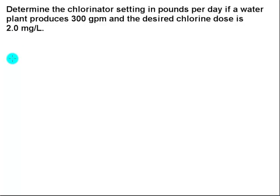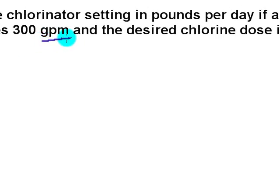Determine the chlorinator setting in pounds per day if a water plant produces 300 gallons per minute and the desired chlorine dose is 2 milligrams per liter. Well, I know from my pounds per day formula that the flow rate has to be in MGD, and they didn't give me the flow rate in MGD, they gave it to me in gallons per minute.